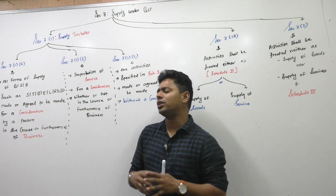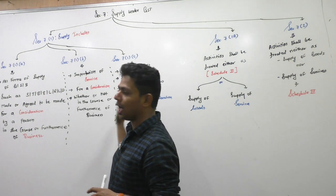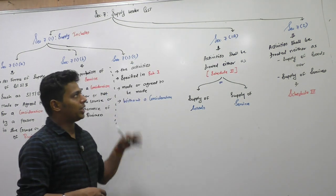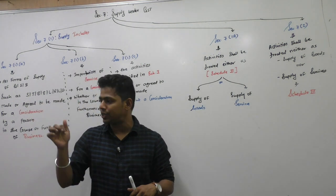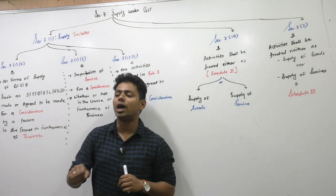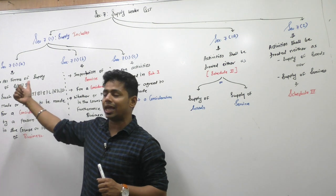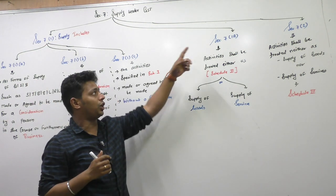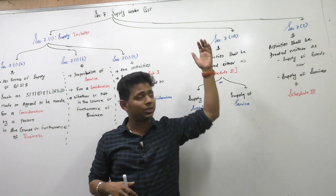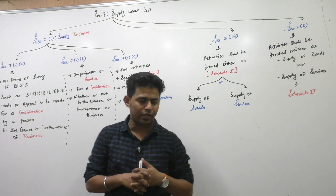Supply is a much wider term than you and I can understand. It is so broad that it covers many aspects. Section 7 has 4 subsections, but only 3 are in effect. On the board you can see only 3 because the 4th one is not in effect. The subsections are: subsection 1, subsection 1A, subsection 2, and subsection 3 — but subsection 3 has not been written because it is not in effect.